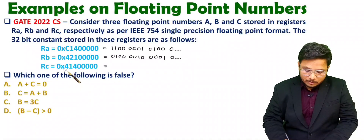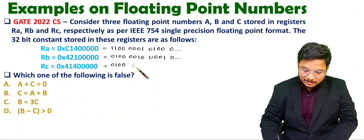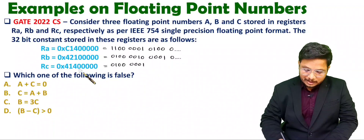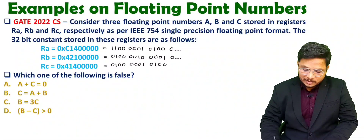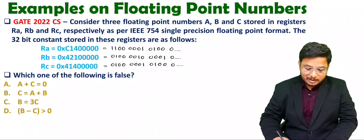For RC we have 4, 1, 4. So 4 means 0100, then 1 means 0001, and again 4 means 0100, and all remaining bits are zeros — zero extension.